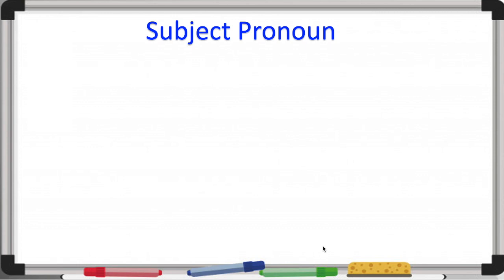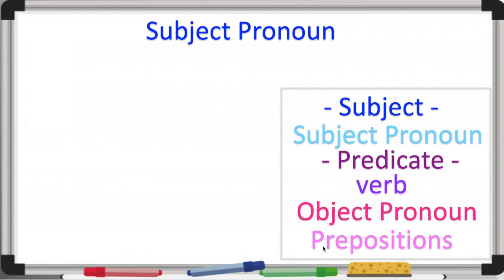So let's refresh a little bit about the subject pronoun. This is a guide — this is the key of the colors I'm going to be using. For the subject I'm going to use blue, light blue for the pronoun, and the predicate it's going to be in pinkish colors. The verb is going to be in purple, the object pronoun in dark pink, and the preposition in light pink.